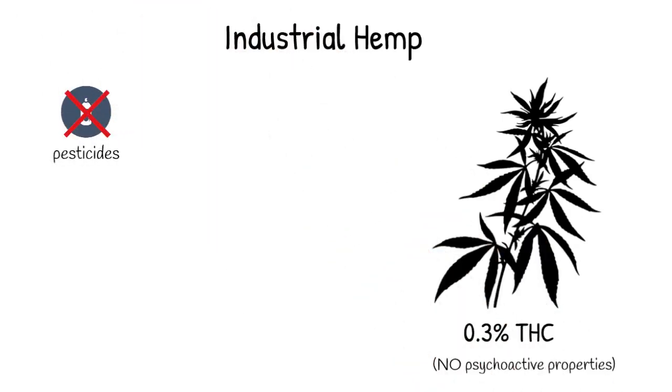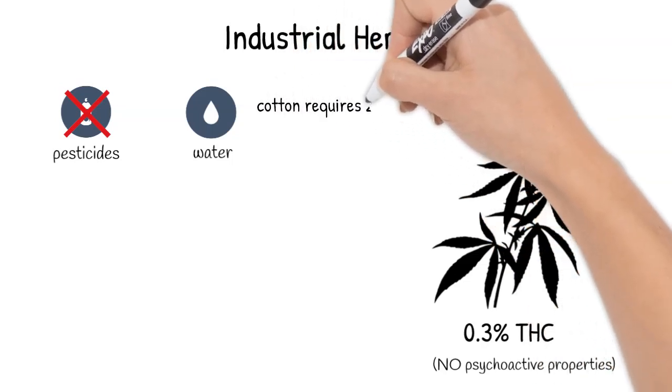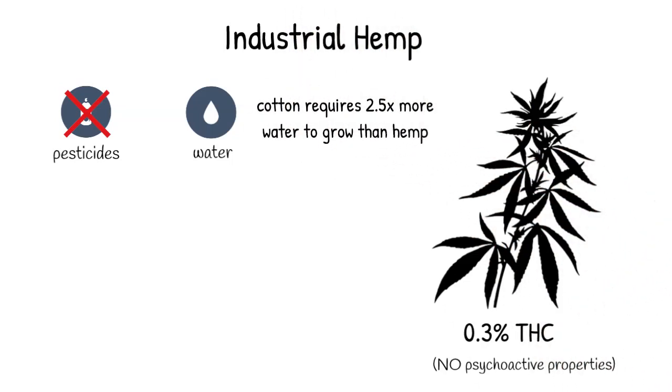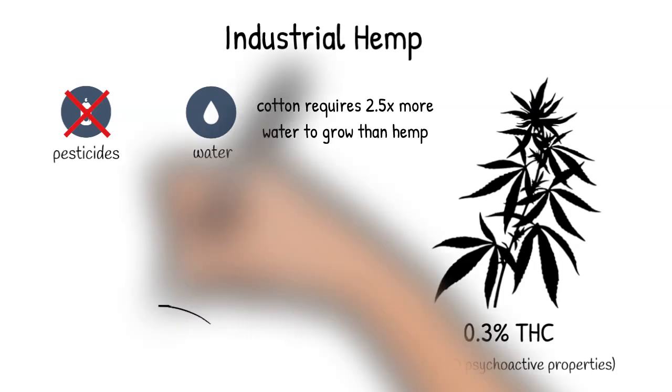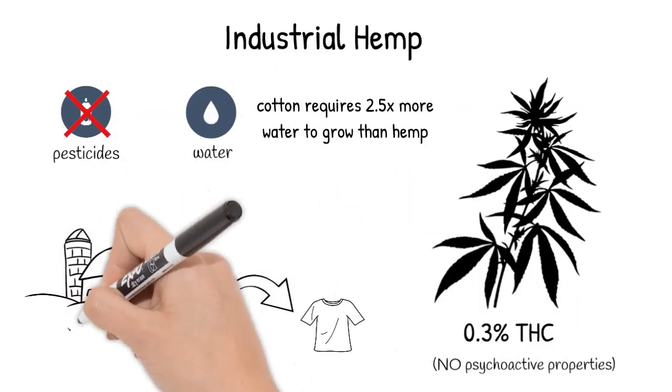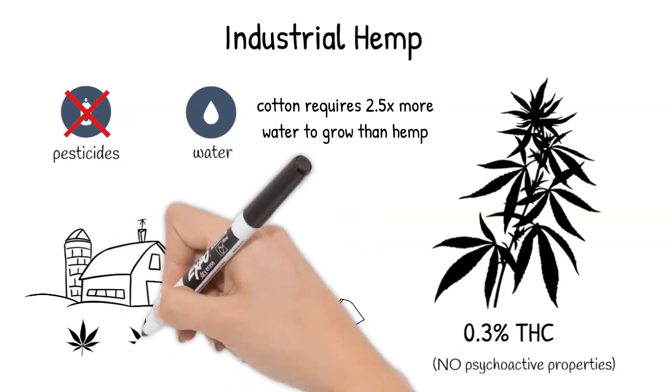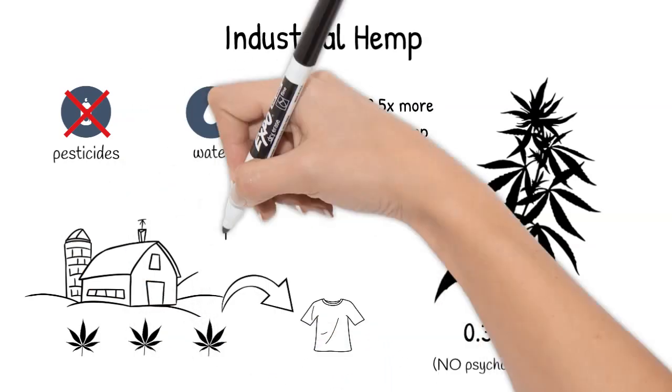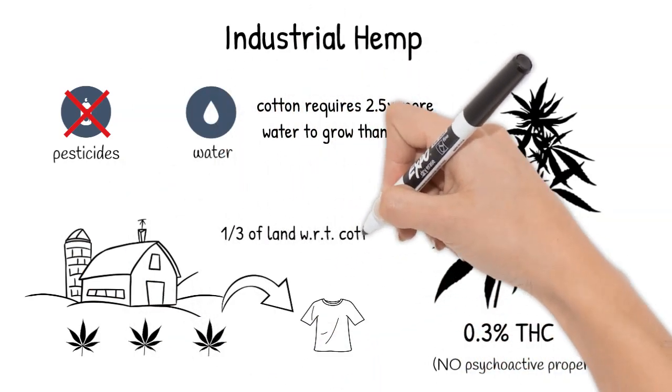Why hemp? Hemp requires no pesticides because of its biological properties, allowing it to grow way faster than cotton. Besides, cotton requires 2.5 times the amount of water to grow compared to hemp. Lastly, to produce one shirt, hemp only needs one-third of the amount of land than cotton to yield the same amount of fiber.